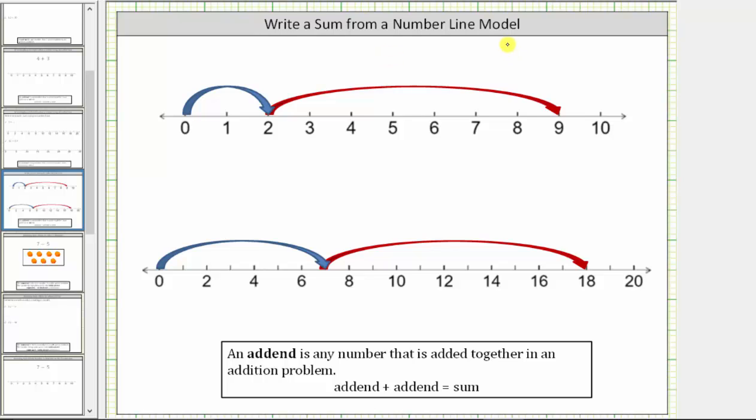Write a sum for each number line model. For review, if we are adding two numbers, the two numbers we are adding are called the addends. The result of the addition is the sum.